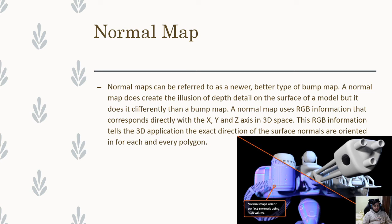A normal map uses RGB information that corresponds directly with the x, y and z axis in 3D space. This RGB information tells the 3D application the exact direction of the surface normals orientated for each and every polygon. So that sounded extremely scientific, however it's quite simple. Essentially the normal map is an illusion of detail.